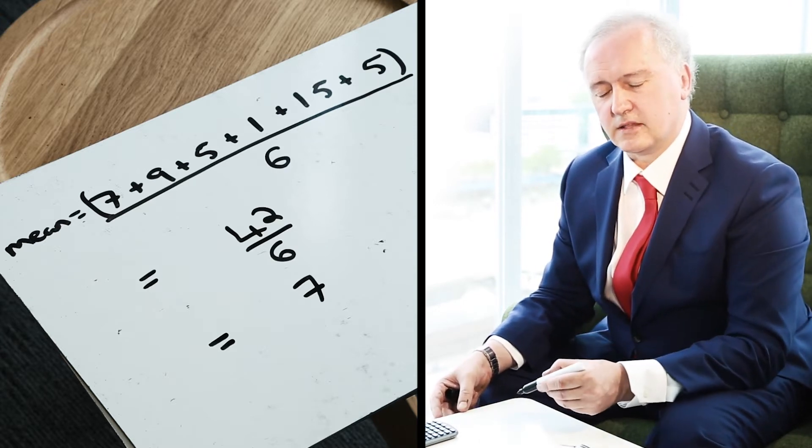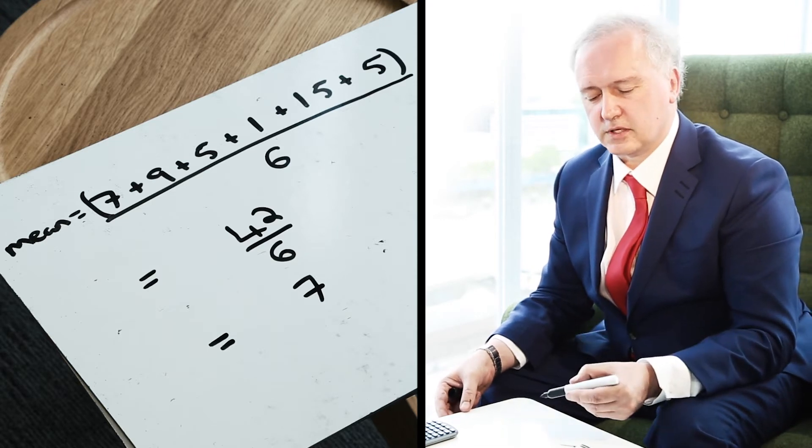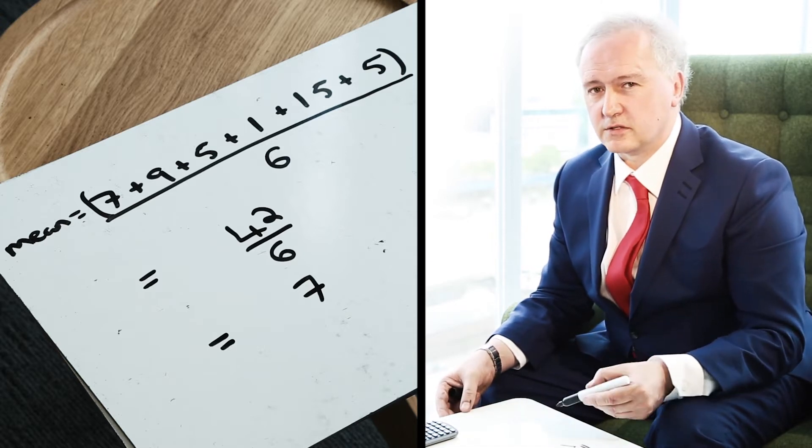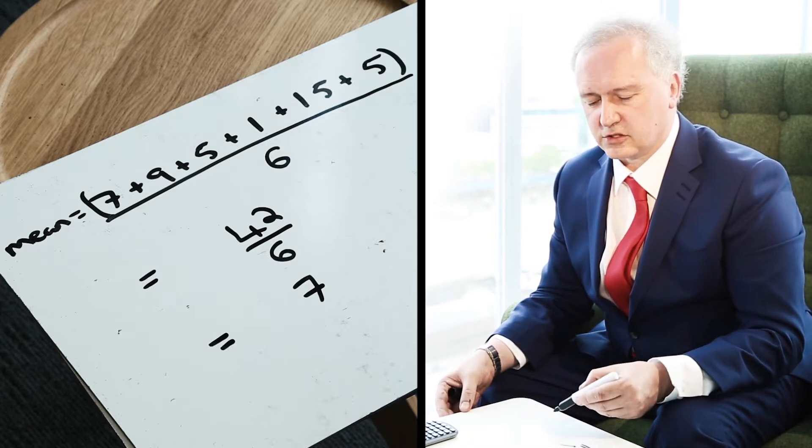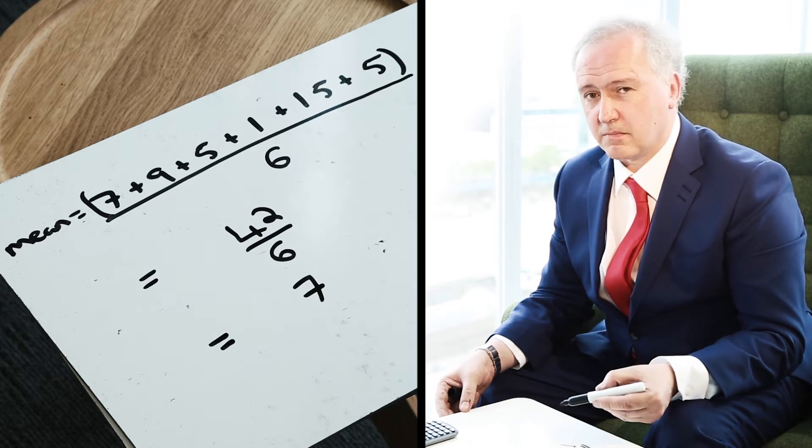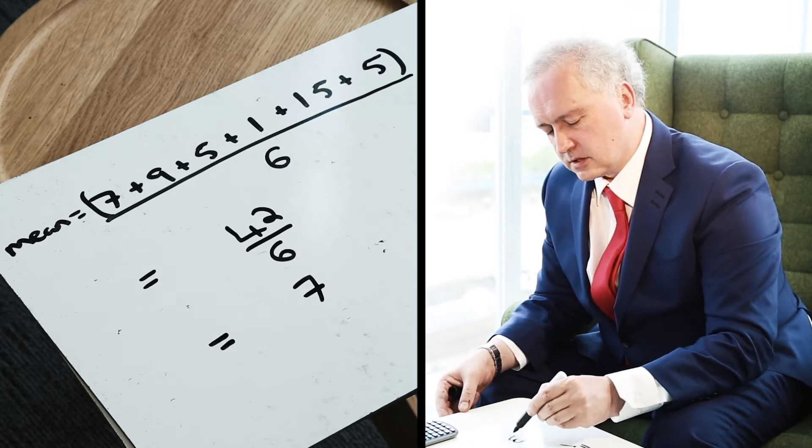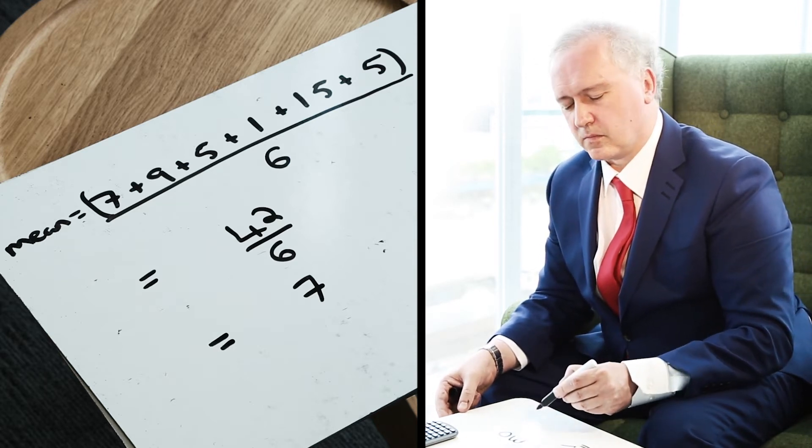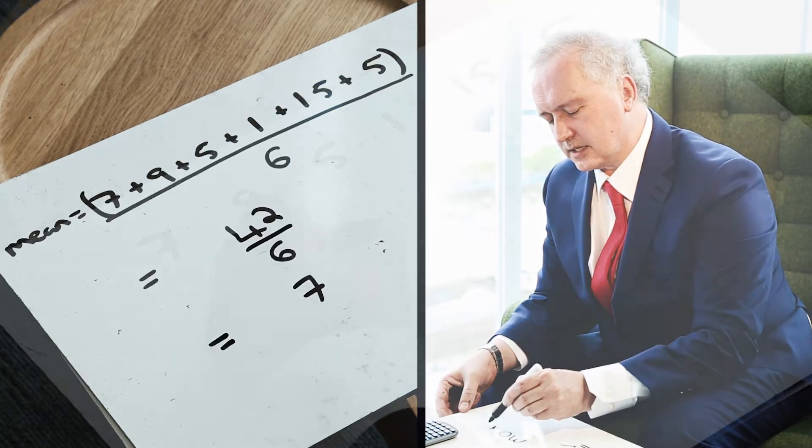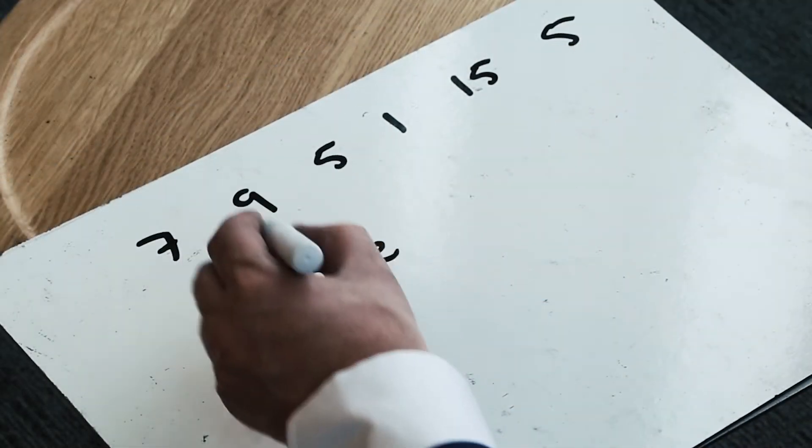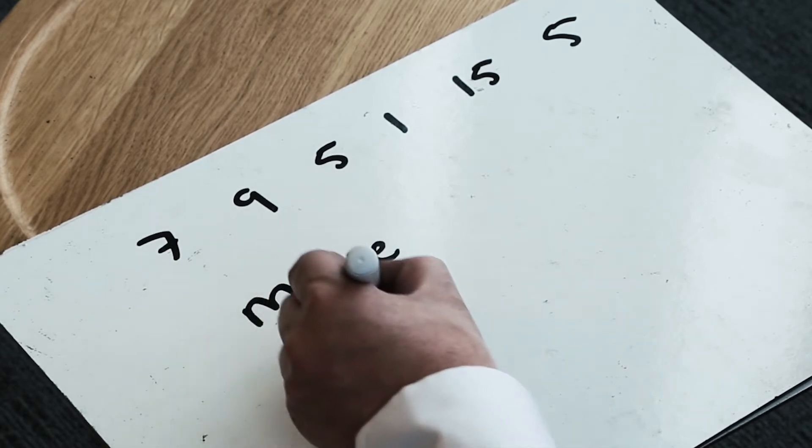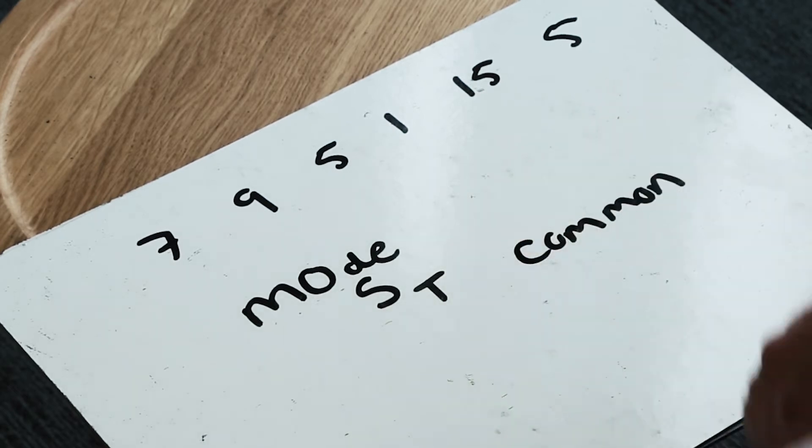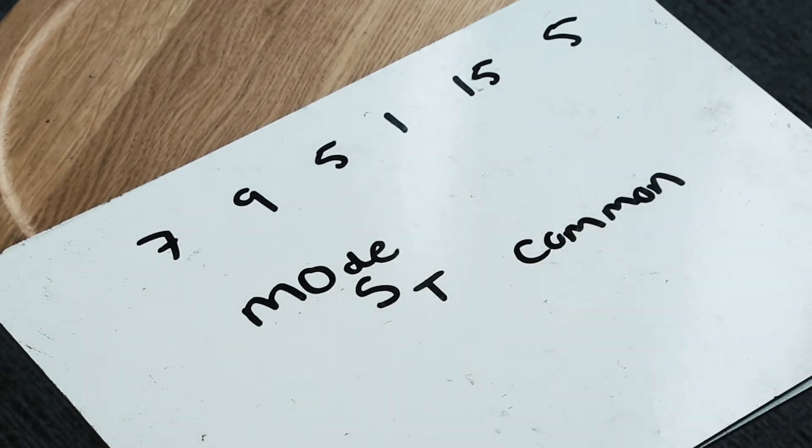If I'm asked to calculate the mode, that's a different form of average, and the crucial thing about the mode is that we have to find the most frequently occurring number. When I write down the word mode, I like to write capital M and capital O, then lowercase d and e, so that MOde is the MOst common number. It just helps me remember that the mode is the most common number.